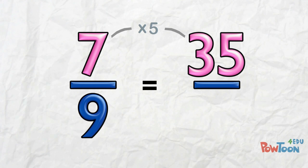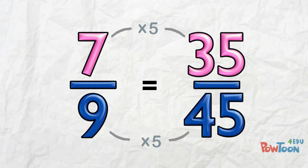Whatever we do to the top, we've got to do to the bottom. So 9 times 5 is 45, and we're done!